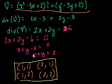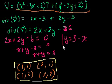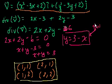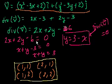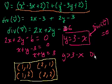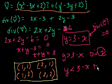We can put this in slope-intercept form: y equals 3 minus x. So along this line, the divergence of the vector field v is equal to 0. If we're above that line — y greater than 3 minus x — the divergence is positive. And if y is less than 3 minus x, the divergence is negative.